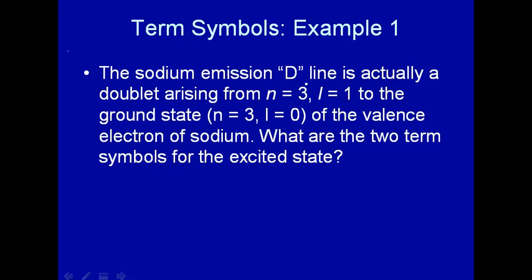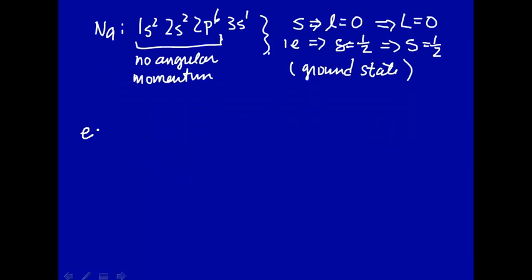The problem states that the excited state from which the electron is going to fall to the ground state and emit light is n=3, l=1. The excited state, n=3, l=1, that is a 3p. So there's one electron in the 3p.